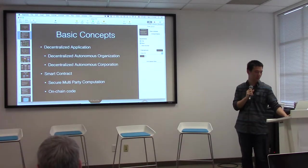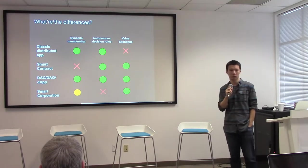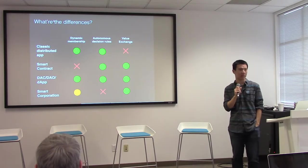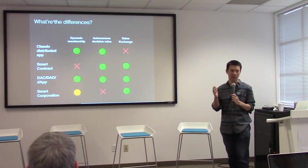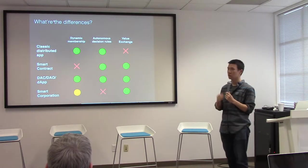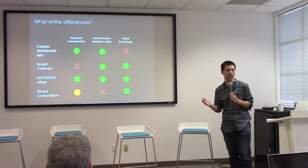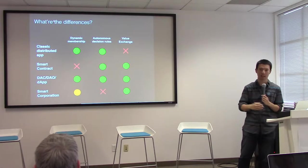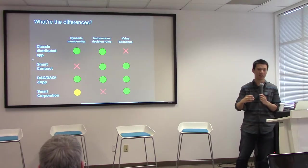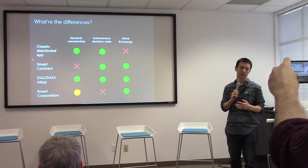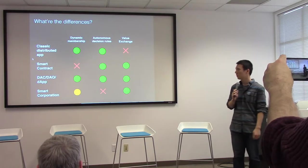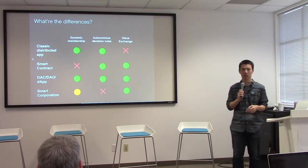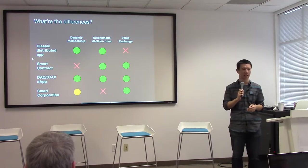It would probably be helpful to have a little chart to look at the main differences between these concepts. The first is a classic distributed app, and I would classify BitTorrent as a perfect example of that. You have dynamic membership and multiple nodes, each of them with autonomous decision rules, but there's not much value exchange there. That limits what can be done and also impacts the incentive mechanisms of all the nodes — if I've finished downloading a movie, I may not want to keep seeding.